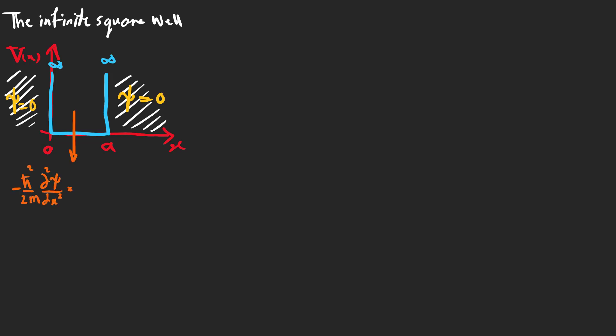Inside the well the potential is 0 and the time-independent Schrodinger equation is like this. We can rewrite it as this equation. The coefficient of psi must be negative, otherwise psi and its second derivative have the same sign and psi wouldn't go to 0 at infinity. E must be larger than 0 so that psi doesn't go to infinity and also be normalizable.